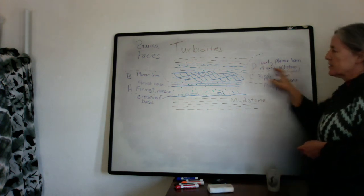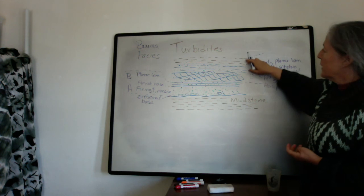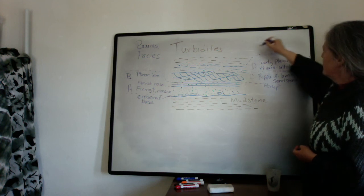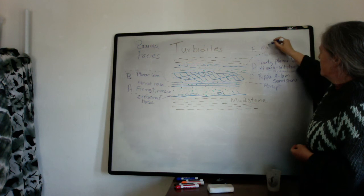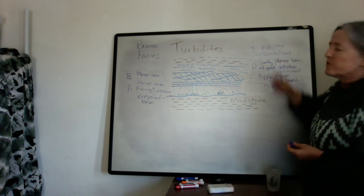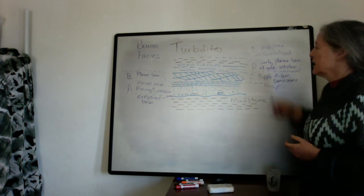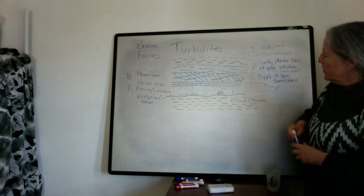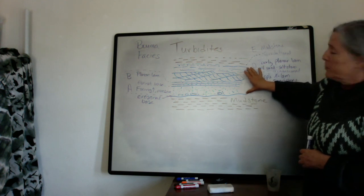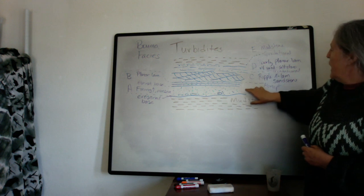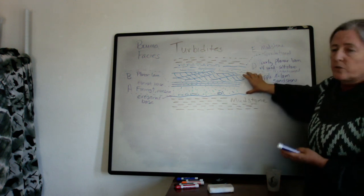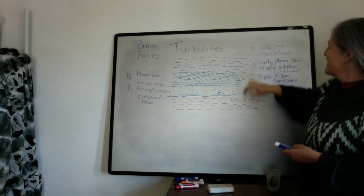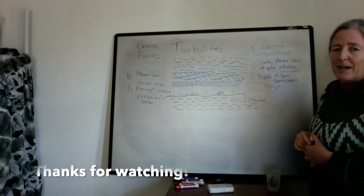Towards the top, most of the silt is just settling from suspension slowly and grades up into the mud. You have a gradational boundary into E, which is the mudstone — the very fine-grained sediment settling out as background between turbidity current flows. The main part of the flow, the turbidity current itself, is the Bouma A through C parts, where the water is flowing pretty quickly. D represents the remaining silt-sized sediment that settles out, and then finally E is the background sedimentation.